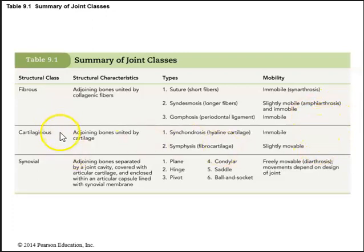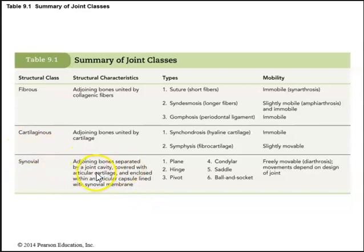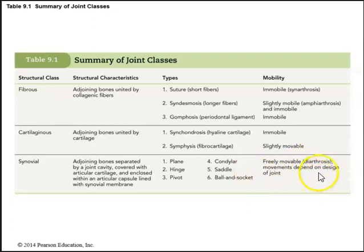The next structural class of joints are synovial joints, where adjoining bones are separated by a joint cavity. They are covered with articular cartilage and enclosed within an articular capsule lined with a synovial membrane. Synovial joints are the only type with a joint cavity. Types include plane, hinge, pivot, condylar, saddle, and ball and socket. All synovial joints are freely movable — classified as diarthroses — and movement depends on the design of the joint.